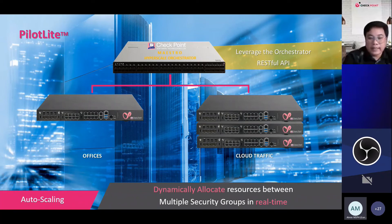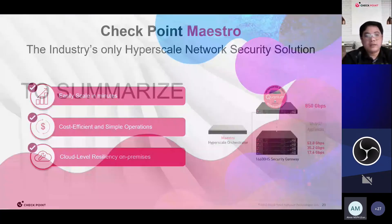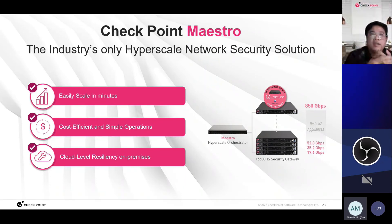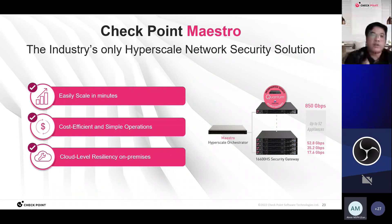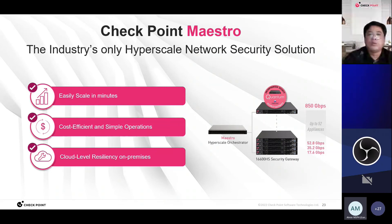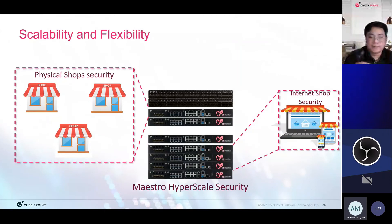To summarize, Checkpoint Maestro hyperscale technology — as shown in the Phylo Light use case — allows you to secure the network at any size. You can start small and grow on demand. It enables easy scaling in minutes, is cost efficient, has simple operations, and provides cloud-level resiliency at the network level.